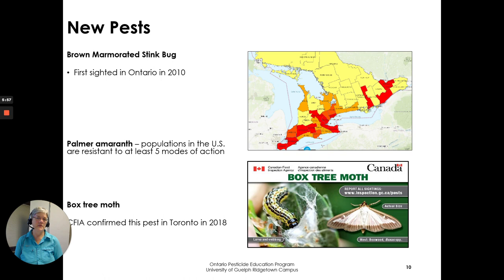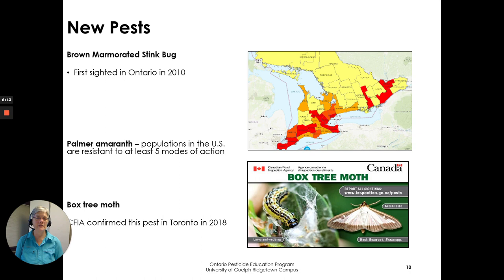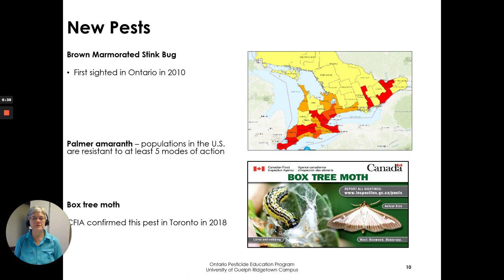Always be aware and keep up to date on new pests for the crops you're growing. Here are a few examples of new pests in Ontario since 2010: brown marmorated stink bug was first discovered and sighted, and you can see from the graph how it's progressed across Ontario. Palmer amaranth is a weed currently in the United States that is resistant to at least five modes of action — five different kinds of herbicides — and if it comes into Canada it will already be a problem. The box tree moth was confirmed by CFIA in Toronto in 2018.